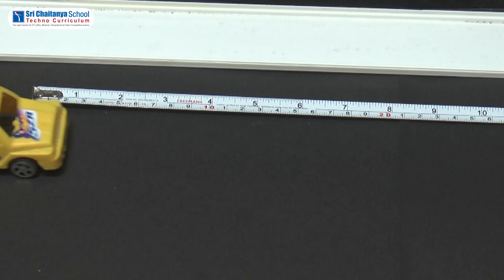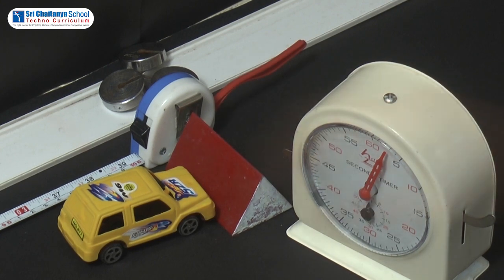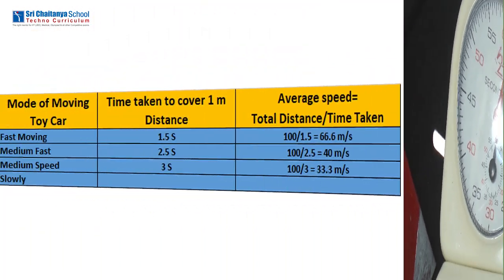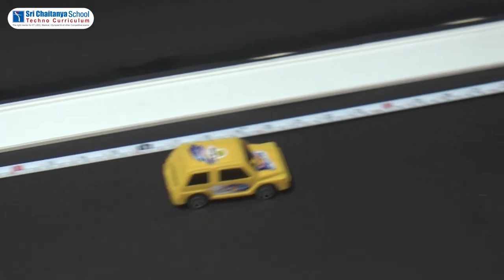Another time, the car goes with some other speed for 100 centimetres. The time measured is 3 seconds. Tabulate the time taken as 3 seconds. Speed is equal to 100 divided by 3, which is equal to 33.3 centimetres per second.